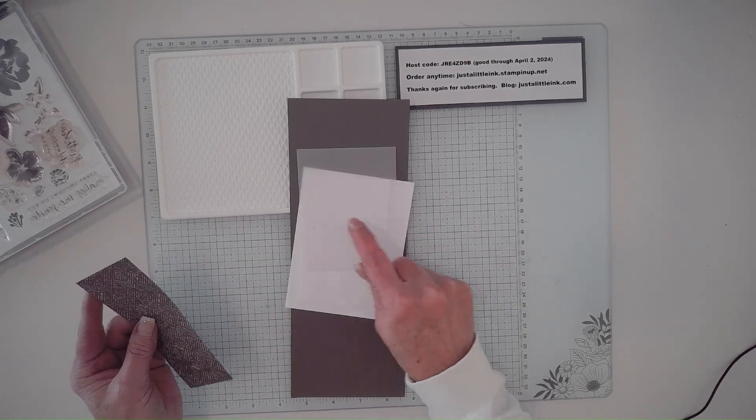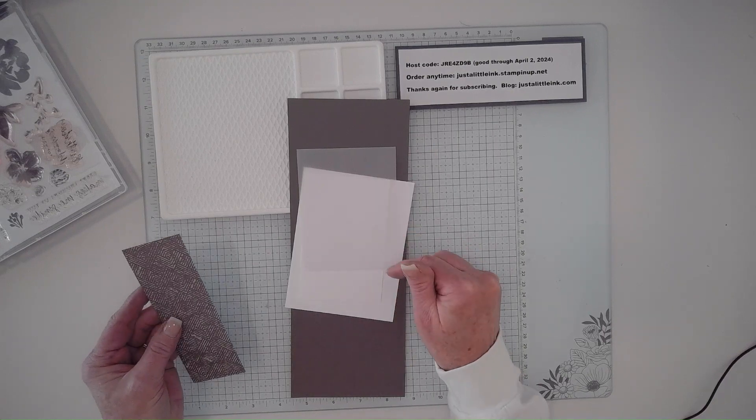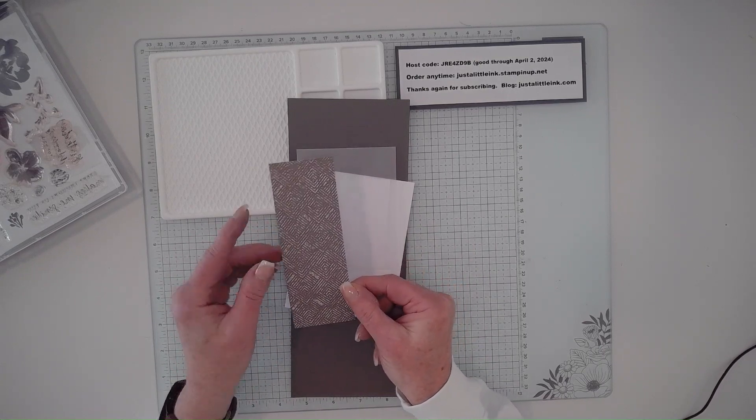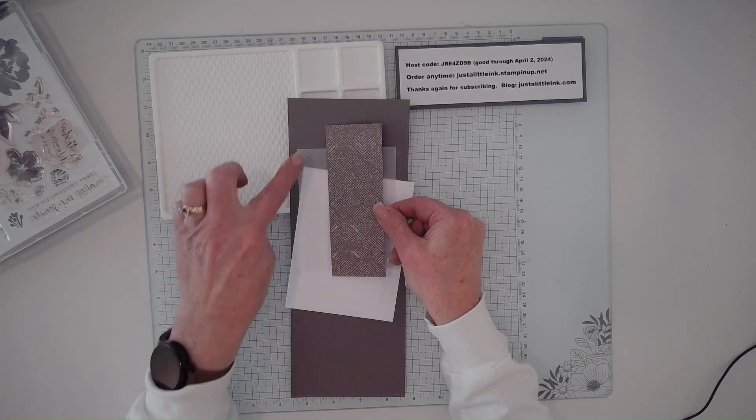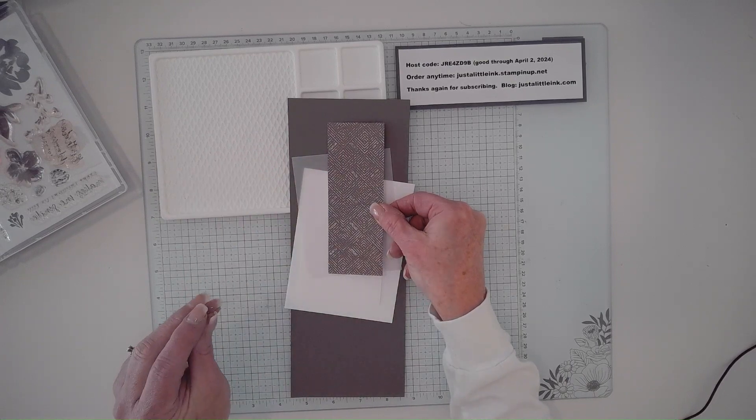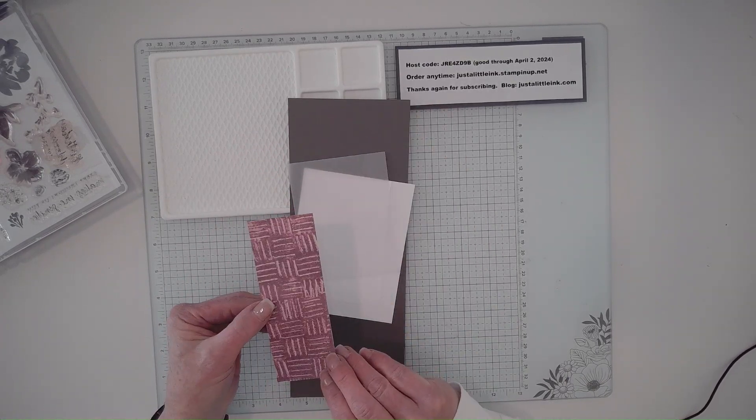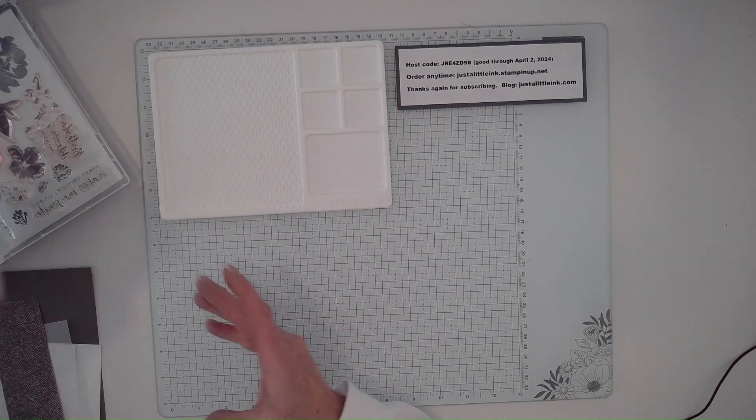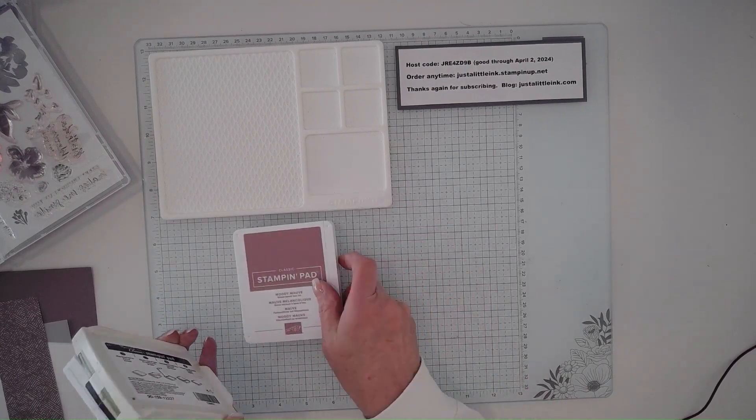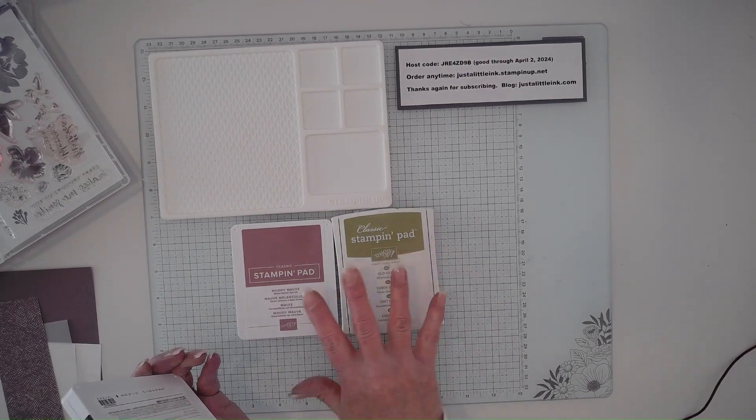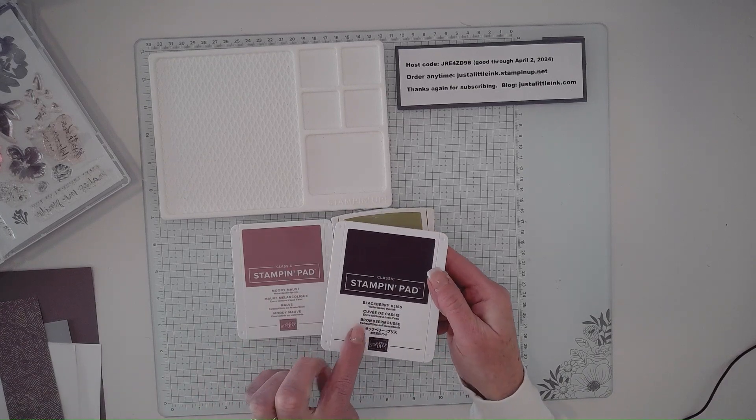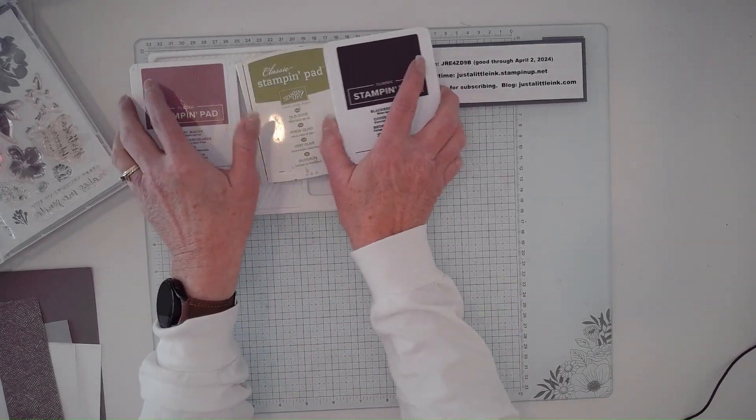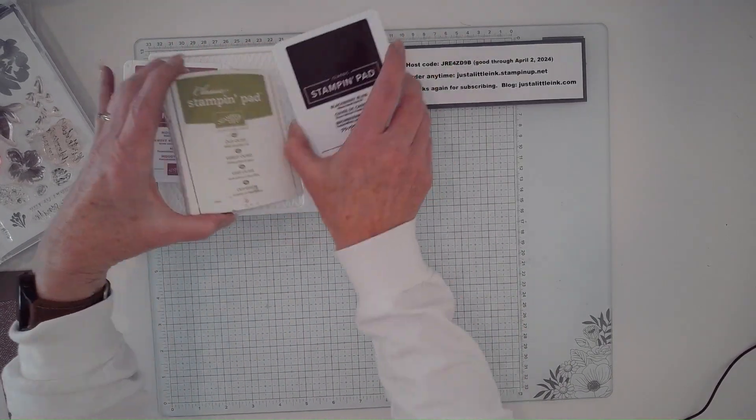You want a piece of vellum cardstock that's three and a half by four and a half, as well as a piece of designer series paper. I really liked the Earth and Elegance papers. There's one that is Pebbled Path with just a little bit of texture. I'm going to be using the colors Moody Mauve for the flower, Old Olive for the leaves, and Blackberry Bliss for that little stamen that goes in the inside.